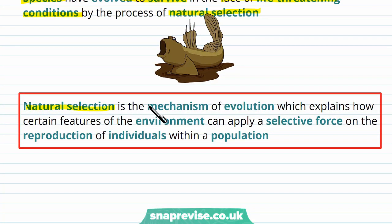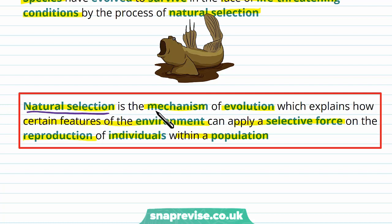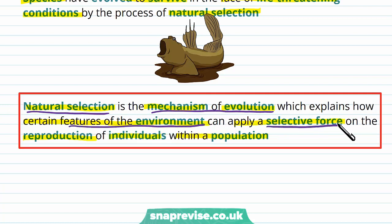Natural selection is the mechanism of evolution, explaining how certain features of the environment can apply a selective force on the reproduction of individuals within a population. Basically, it's showing how certain challenges in the environment — what we call a selective force — only allow those capable of adapting to survive, and those that do survive are able to reproduce, pass their genes on, and therefore that gene will become more common.